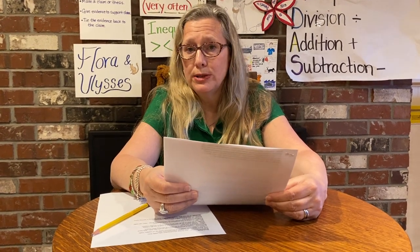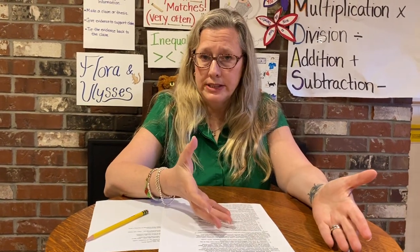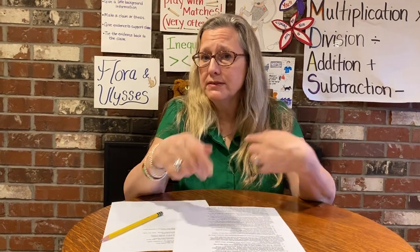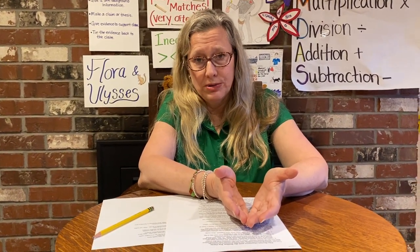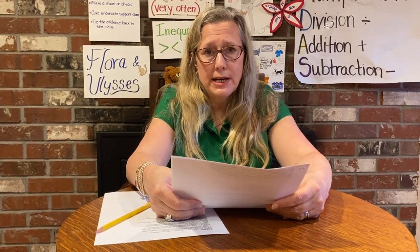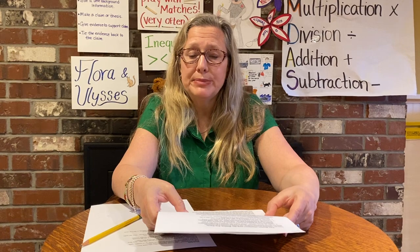In 1753, France began building forts in areas near the Ohio River Valley that both France and England had claimed. At this time England had colonies in the Americas, but so did France and Spain, and all three countries were trying to grab as much land as they could. Both the British and the French had allies among the native peoples and they went to war. The British colonists could not win this war by themselves, so England sent their army to help. Then in 1763, with the help of the Iroquois and the British army, the colonists won the French and Indian War.